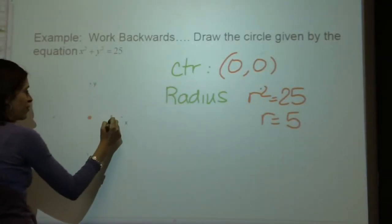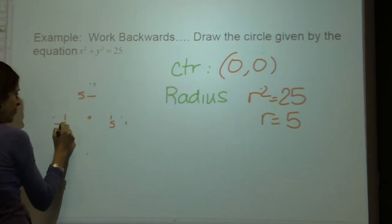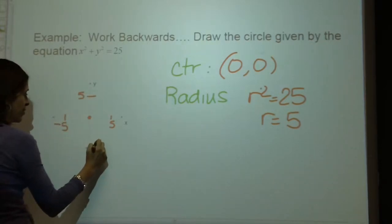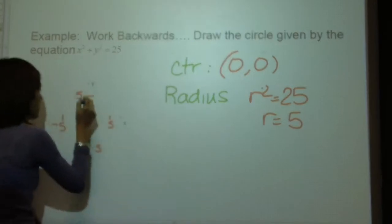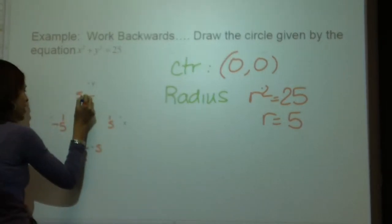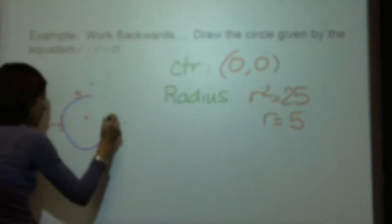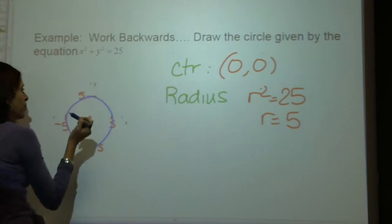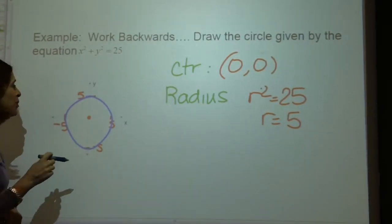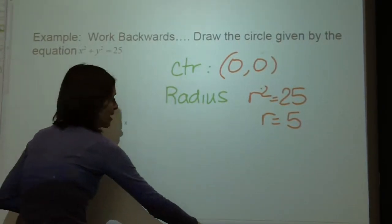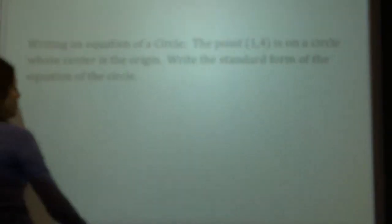So I've got my radius and my center — I'm going to plot my center and go along the axis, because I know where 5 is. Over here is negative 5, and down here is negative 5. I'm just going to do my best sketch — that should be where my circle goes. Smartboard doesn't do the best job.